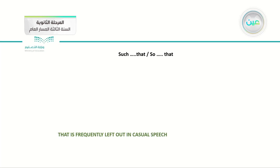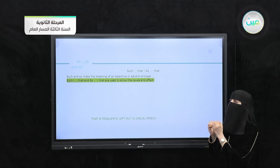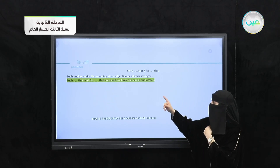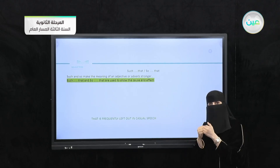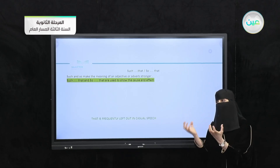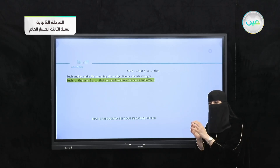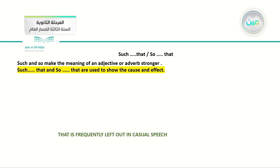The second objective is such that and so that. Such and so make the meaning of an adjective or adverb stronger when used individually. However, such that and so that are used to show cause and effect. When applying them in the past, the sentence is divided into a cause and an effect joined by 'that.'